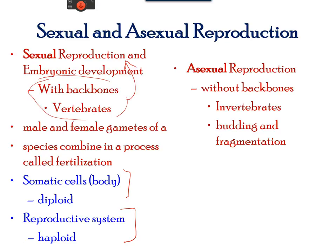Animals without a backbone may have some asexual reproductive processes, such as budding and fragmentation — that is, a piece can be separated and it can grow into a new individual. Some fish, amphibians, and reptiles may also exhibit these processes.